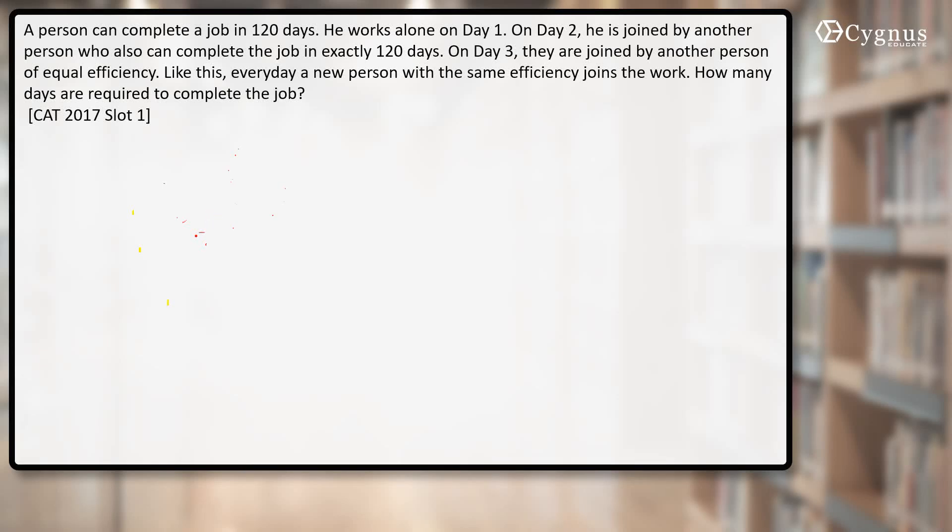Let's look at the question. What's given? A person can complete a job in 120 days. He works alone on day one. On day two, he is joined by another person who can also complete the job in exactly 120 days. That means the efficiency of both persons is the same. On day three, they are joined by another person of equal efficiency, meaning each person has the same efficiency.